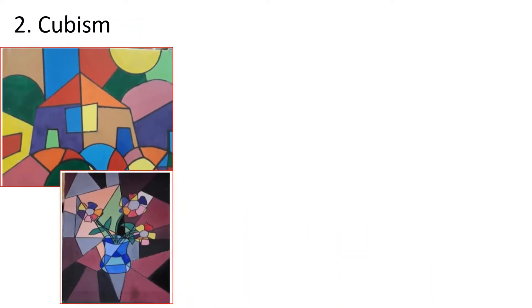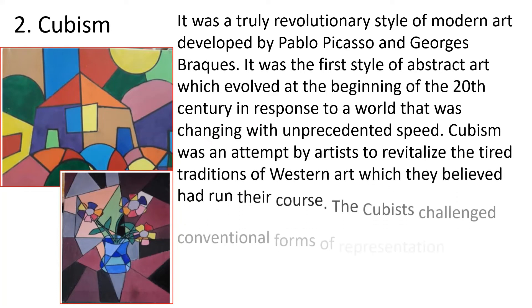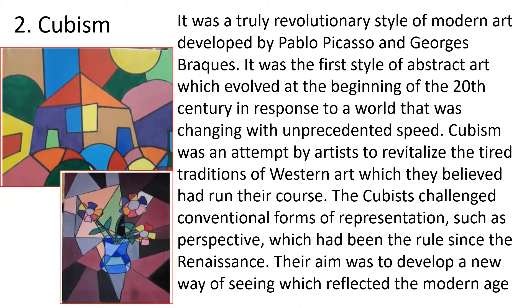Number two is cubism. It was a truly revolutionary style of modern art developed by Pablo Picasso and Georges Braque. It was the first style of abstract art, which evolved at the beginning of the 20th century in response to a world that was changing with an unprecedented speed. Cubism was an attempt by artists to revitalize the tradition of western art, which they believed had run its course. The cubists challenged conventional forms of representation such as perspective, which had been the rule since the Renaissance. Their aim was to develop a new way of seeing which reflected the modern aims.